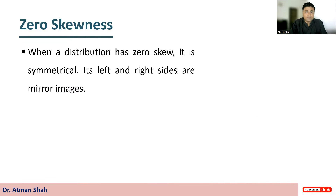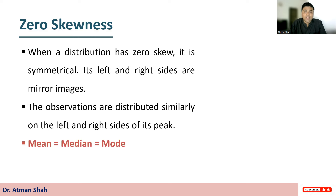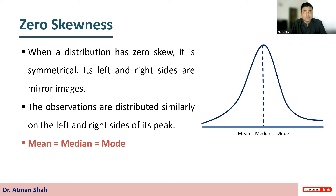First is zero skewness. When a distribution has zero skew, it is symmetrical and its left and right sides are mirror images. Therefore, the observations are distributed similarly on the left and right sides of its peak — equally distributed on both sides. In this case, the values of mean, median, and mode are the same. We can see in this diagram that mean, median, and mode are equal, and we have a symmetrical curve with observations equally distributed on both sides of its peak.